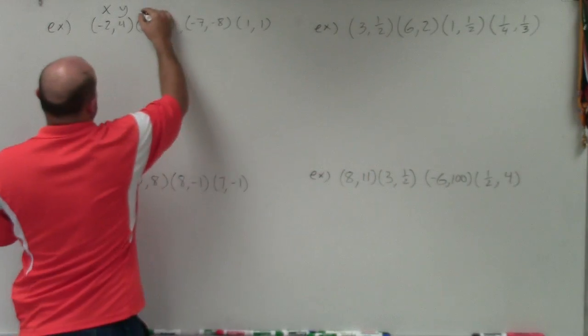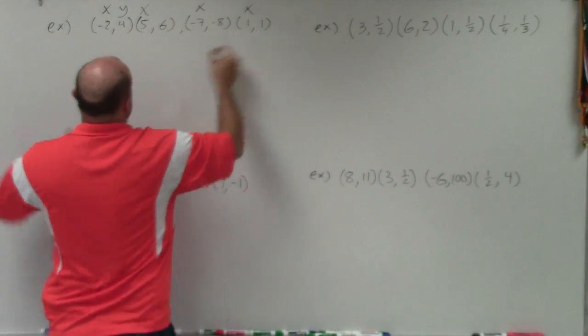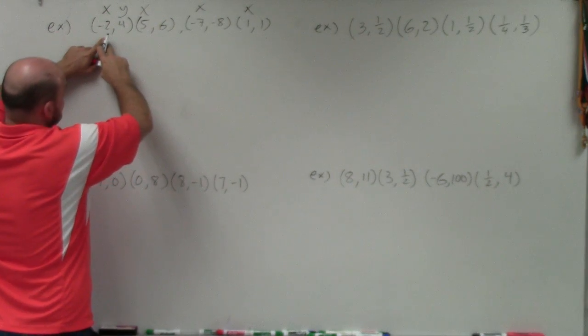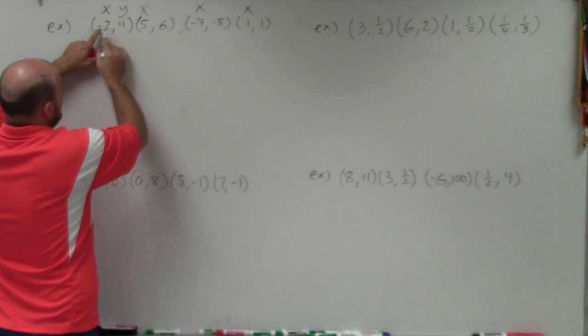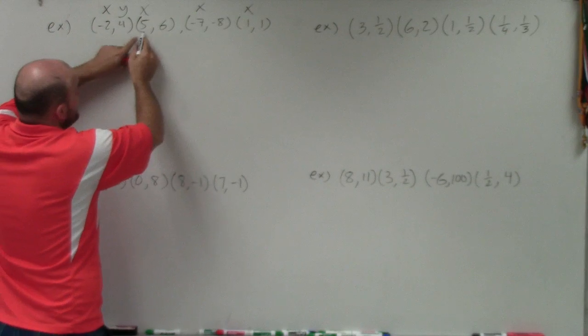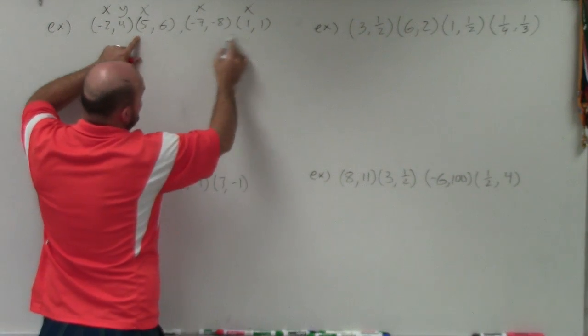So basically, what we want to do is look at every single x-value and say, does every single x-value go uniquely only to one value? Well, negative 2 only goes to 4, right? There's no other representation where negative 2 goes somewhere else. 5 goes to 6. Does 5 go anywhere else? No.